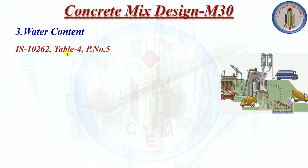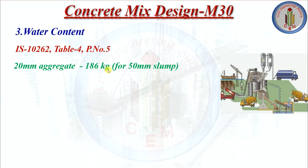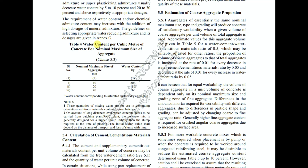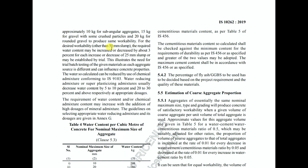Step 3 is water content. As per IS 10262 Table 4 page 5, for 20mm aggregate the water content is 186 kg for 50mm slump. The code states: for workability other than 50mm slump, the required water content may be increased or decreased by about 3% for each increase or decrease of 25mm slump.